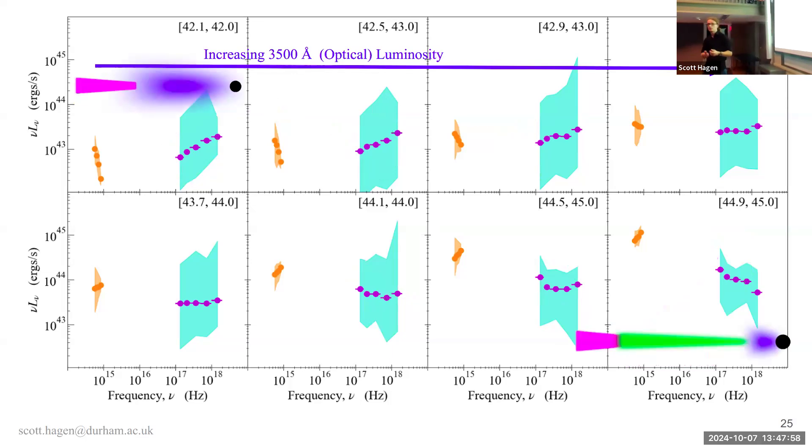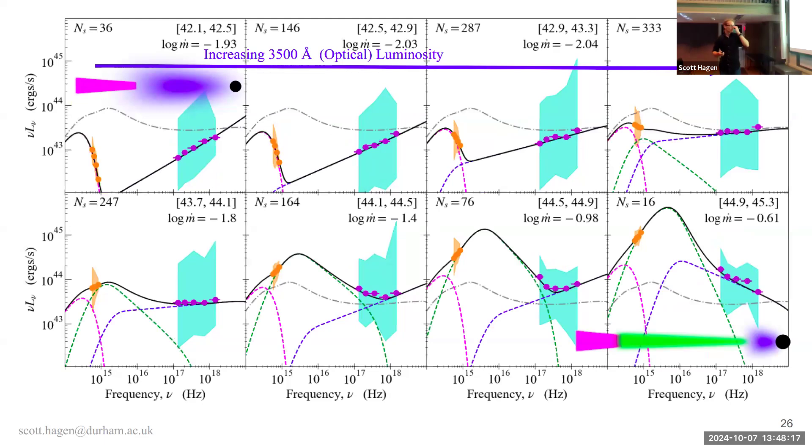And so, we think you can explain this with different accretion states. Where you go from a state dominated by an X-ray plasma at low luminosity, to a very strong disk-dominated state at high luminosity. But we can do more than just speculate. We can actually model it, and apply our models and see if it is feasible.